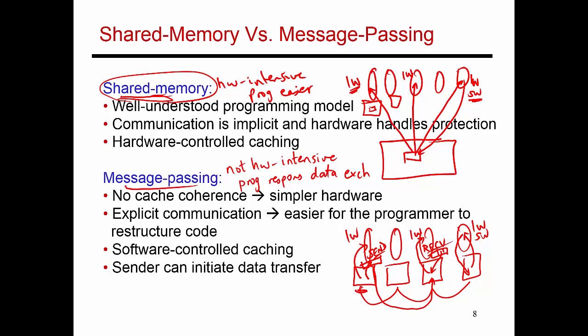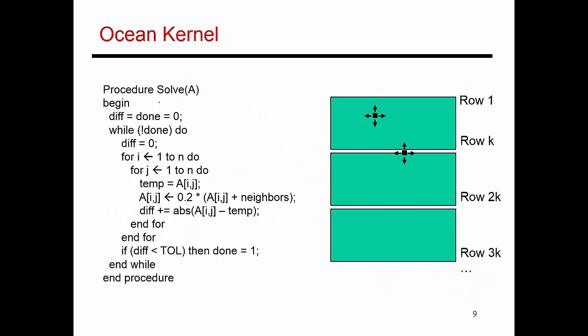Let's understand these models a little bit better. Let's look at an example program. Here's one example scientific application. This is referred to as the ocean kernel. What it's doing is it's modeling the temperature of different particles in the ocean. In every single time step, the new temperature of a molecule is determined by the average temperature of itself and its neighboring molecules. You go through an iteration where you update the temperature of every single molecule based on the values of the neighbors. Then you do another iteration and so on, and you keep doing this until the values converge.